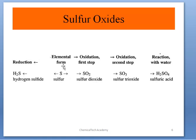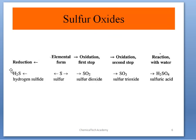Looking at the diagram, from left to right we have oxidation, and from right to left we have reduction. Starting from elemental sulfur (S): if we add hydrogen or remove oxygen, that is reduction, producing H2S. If we add oxygen to S, that is oxidation, producing SO2 (sulfur dioxide). One more oxidation step produces SO3 (sulfur trioxide). From right to left, we remove oxygen and add hydrogen — that is reduction.